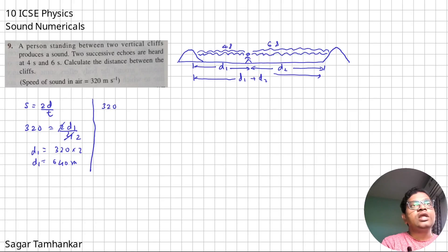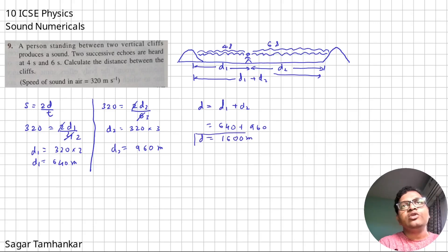Now in this, we have 320 equals 2 times D2 over 6. And this is 320 into 3, 960 meters. So what will be the total distance? So D equals D1 plus D2, and that is 640 plus 960, and that will give us 1600 meters. So the distance between the two cliffs is 1600 meters.